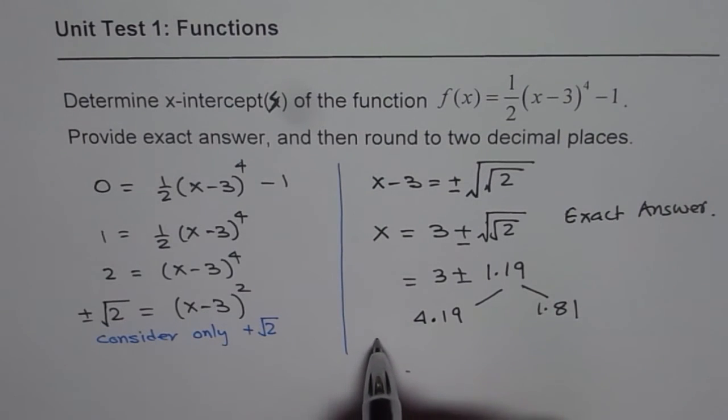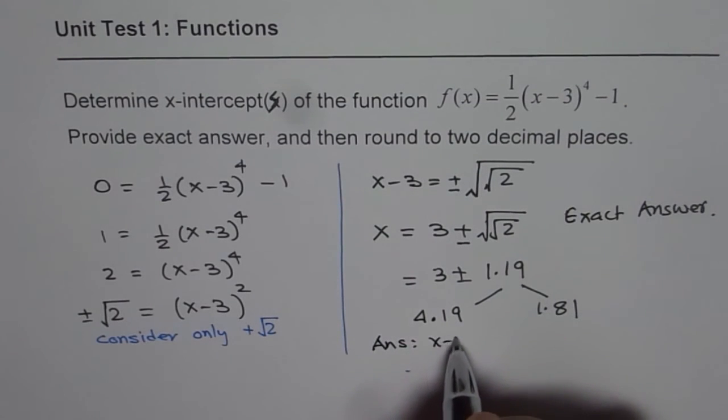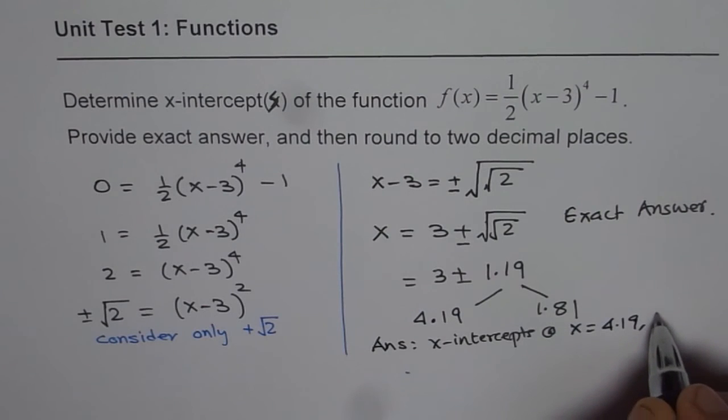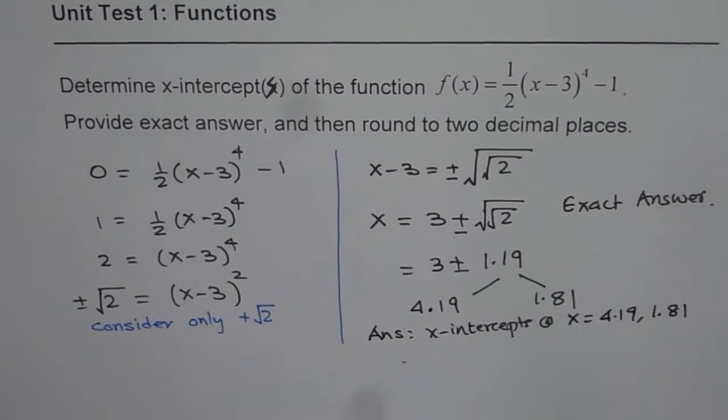So we get x-intercepts at x equals 4.19 or 1.81. So these are the answers for us. So go through the calculations once again.